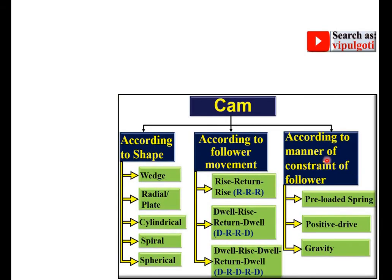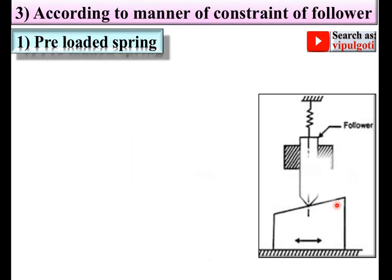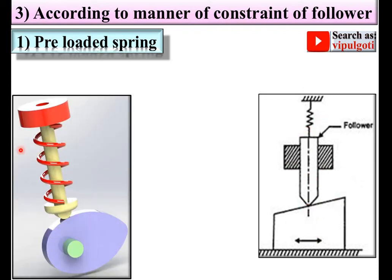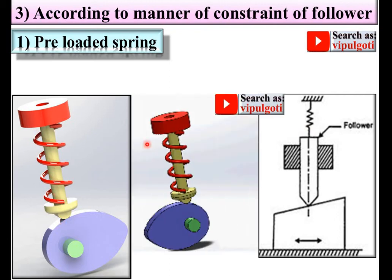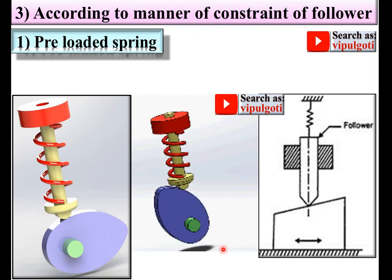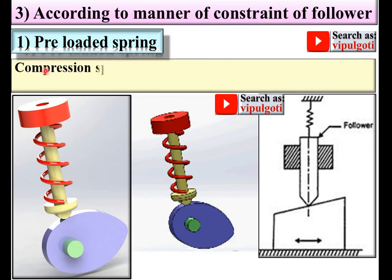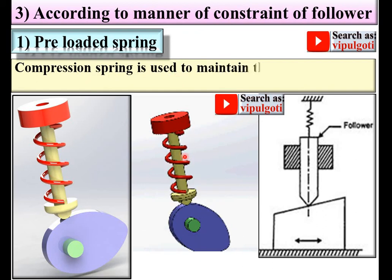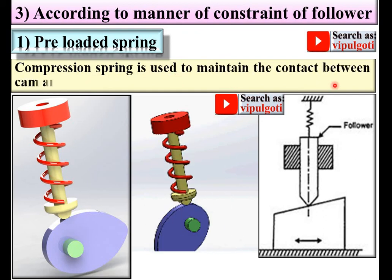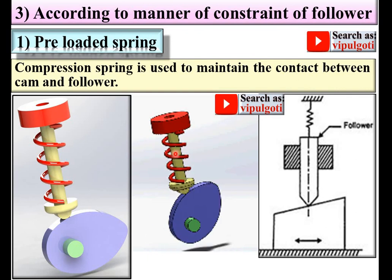Next, according to the manner of constraint of the follower: the first type is the pre-loaded spring cam. Here you can see a spring is provided, and a compression spring is used to maintain the contact between the cam and follower.